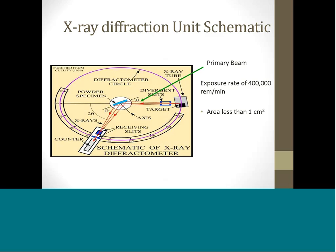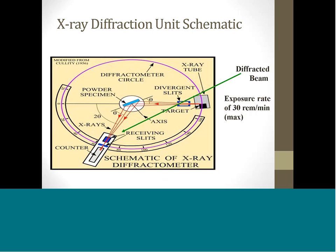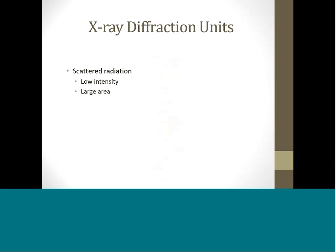The diffracted beam is much lower in intensity, on the order of 30 REM per minute maximum, than the primary beam. X-ray diffraction units produce scattered radiation of relatively low intensity. However, this scattered radiation, if not controlled, can cover a reasonably large area and represent a chronic exposure hazard to long-term users of these machines.